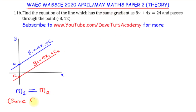Once we have this understanding, our work becomes easy. From the first equation, we find the slope by writing it in the form y equals mx plus c. Then, since we know the point given for the second equation, we substitute those x and y values using the gradient obtained from the first equation.